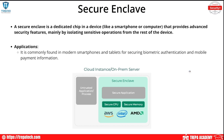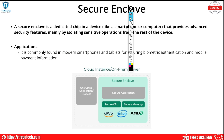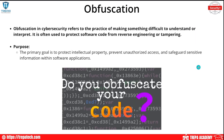Then we have secure enclaves. A secure enclave is a dedicated chip in a device like a smartphone or computer that provides advanced security features, mainly by isolating sensitive operations from the rest of the device. It is commonly found in modern smartphones and tablets for securing biometric authentication and mobile payment confirmation.